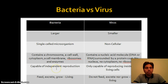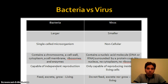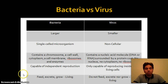Bacteria are capable of independent reproduction — given enough food and space, a bacterium splits and creates many more bacteria. A virus cannot do that; it needs another cell to reproduce. Bacteria feed, excrete waste, and grow, hence they are living things. Viruses do not feed, do not excrete, do not grow — they are considered non-living things.